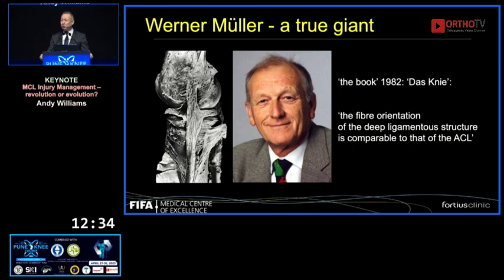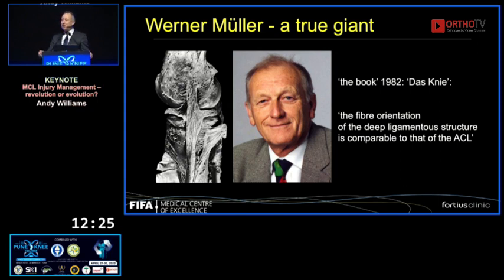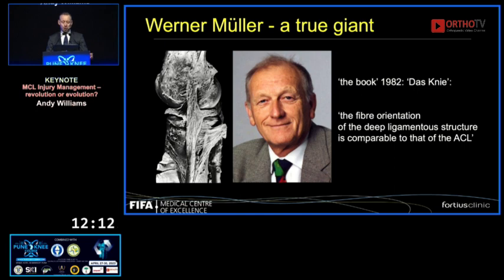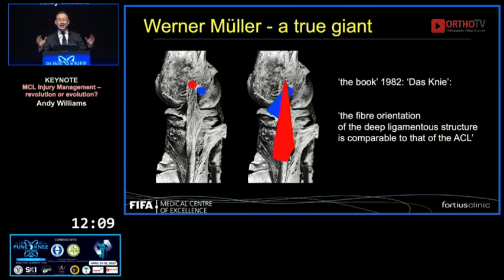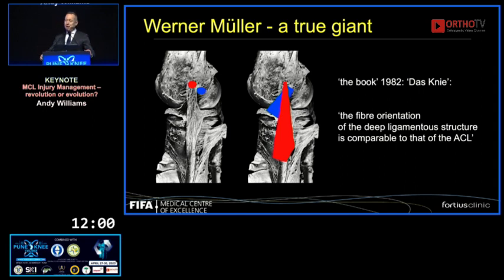Is this new? I was all excited and thought we'd found something important. I was honored to give the first ever Werner Muller lecture for ESCA, and in preparation I bought his book published in 1982. Sadly, Werner beat us to it by 30 years. If you look at his dissection and look at the superficial and deep MCL, he described exactly what we've just reported in the journal. He even wrote that the fiber orientation of the deep ligamentous structure is comparable to that of the ACL — in other words, it's moving anteriorly as it goes distally.